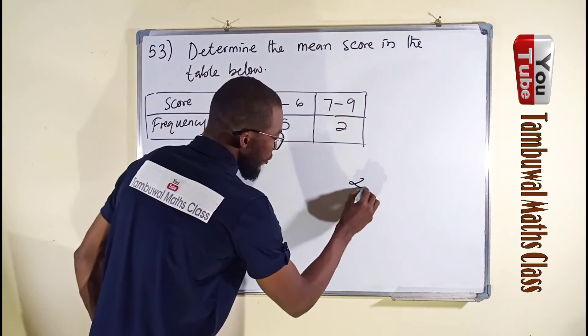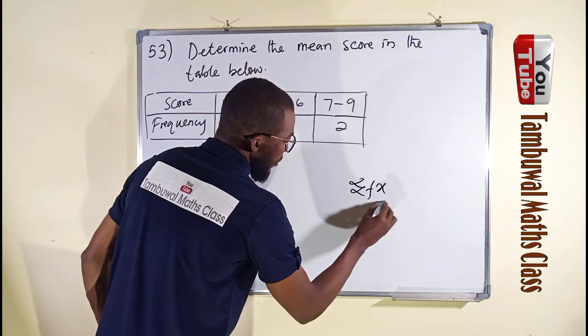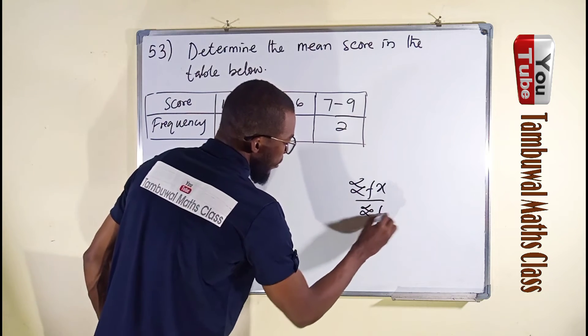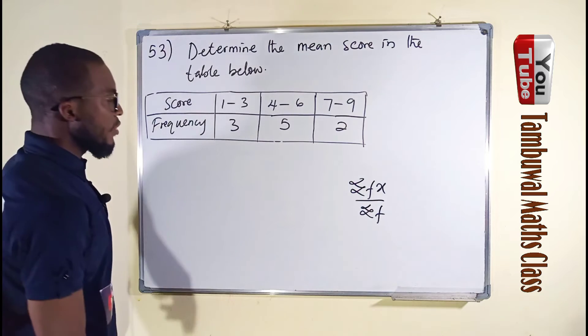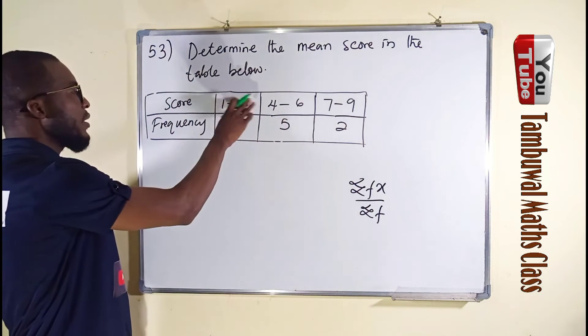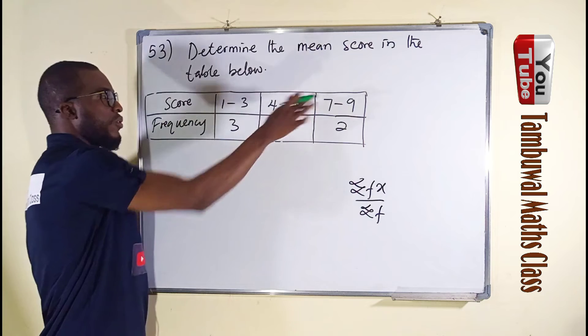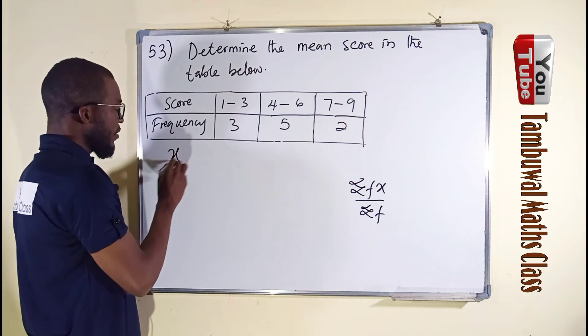The formula remains summation of fx divided by summation of f. So now let us find our x first, which is the midpoint or the mid value between the scores. Our x is here.